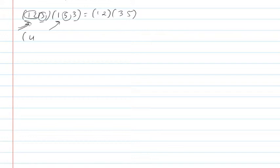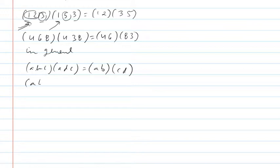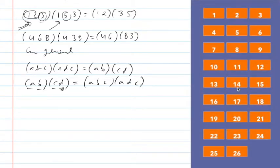This is true for other numbers too. For instance, (4, 6, 8) composed with (4, 3, 8) turns into (4, 6)(8, 3). In general, (A, B, C)(A, D, C) = (A, B)(C, D). And it works in reverse: if you have (A, B)(C, D), that's equivalent to (A, B, C)(A, D, C) — you keep the first and third and put the other number in the middle.